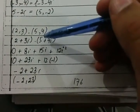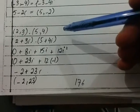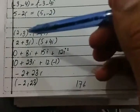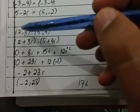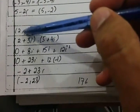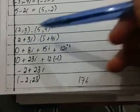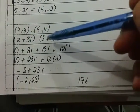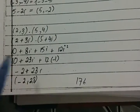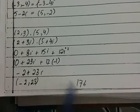Now, how is multiplication of complex numbers done? Addition and subtraction are quite simple — real with real and imaginary with imaginary. But multiplication needs careful attention. For example, (2, 3) multiplied by (5, 4): we write (2, 3) as 2 plus 3 iota, and (5, 4) as 5 plus 4 iota. These multiply just like two algebraic expressions.